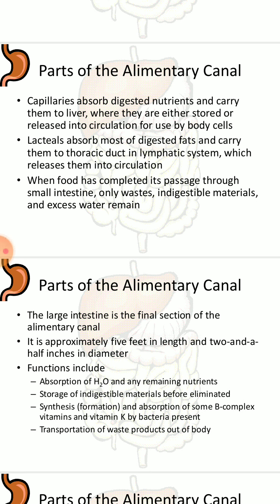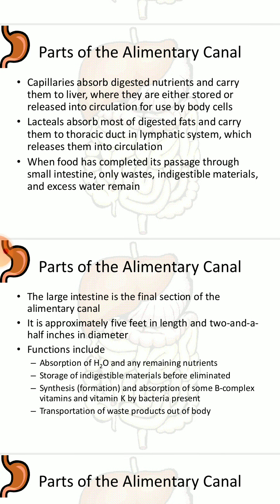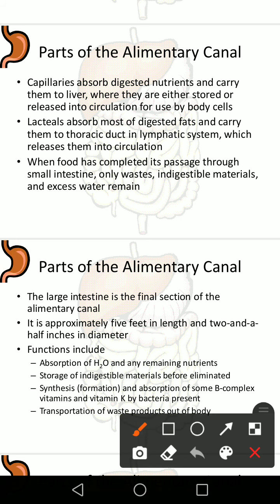When food has completed its passage through the small intestine, only waste, indigestible materials, and excess water remain. The large intestine is the final section of the alimentary canal, approximately 5 feet in length and 2.5 inches in diameter. Its functions include absorption of water and remaining nutrients, storage of indigestible materials before elimination, synthesis and absorption of some B-complex vitamins and vitamin K by bacteria present, and transportation of waste products out of the body.